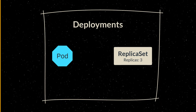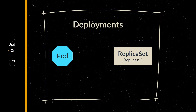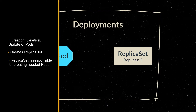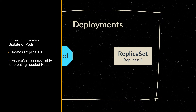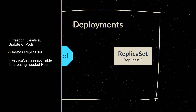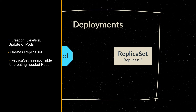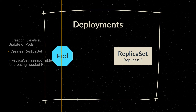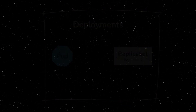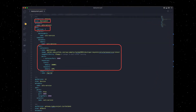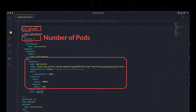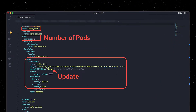Deployments can manage the creation, deletion, and update of pods, but also automatically create a replica set which is responsible for creating the needed pods. A Kubernetes deployment allows you to describe an application's lifecycle, such as the number of pods, how they should get updated, and which image to use.